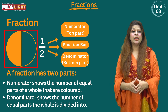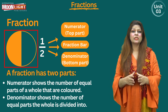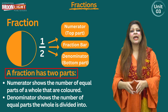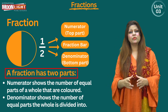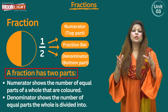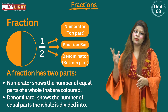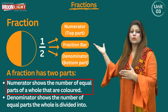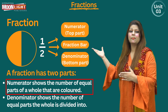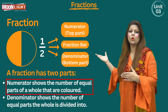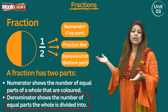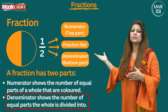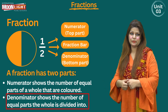A fraction has two main parts. The first is the numerator, which shows the number of equal parts of a whole that are colored. The second is the denominator, which shows the number of equal parts the whole is divided into.